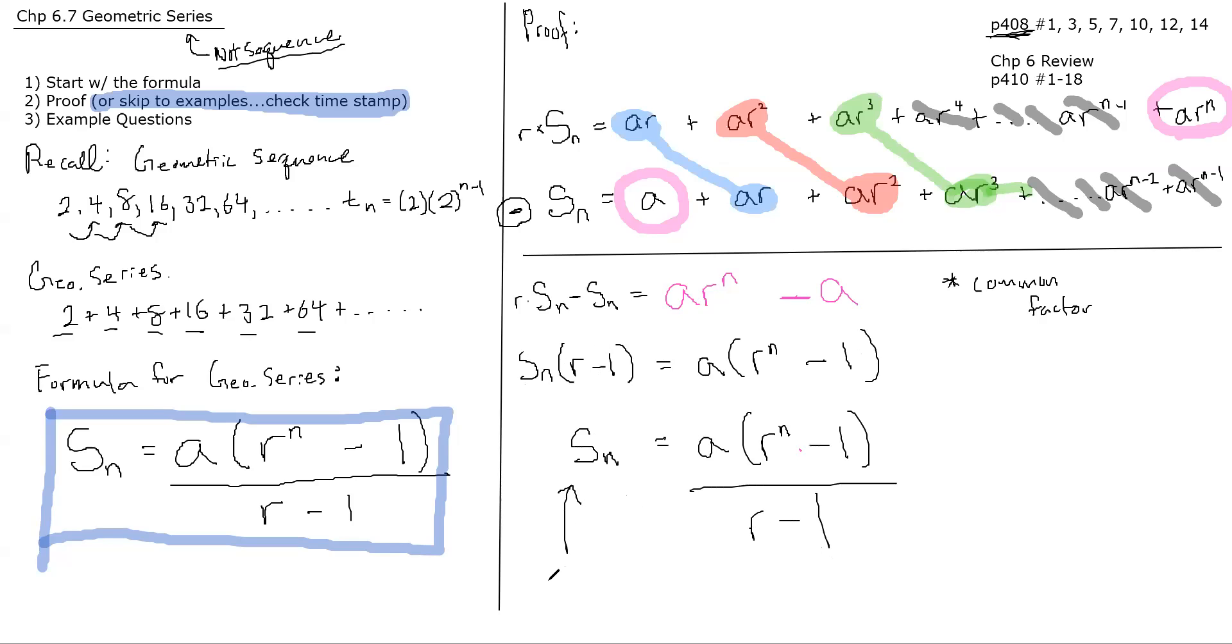Just as a reminder, this would be the total sum of the series of N terms. I don't know how much that is. It could be a hundred terms, could be a thousand terms, could be two terms. Whatever N is. The A value is, as usual, the first term, T_1. R is going to be the common ratio. And the N, as I mentioned before, is the number of terms in the series.